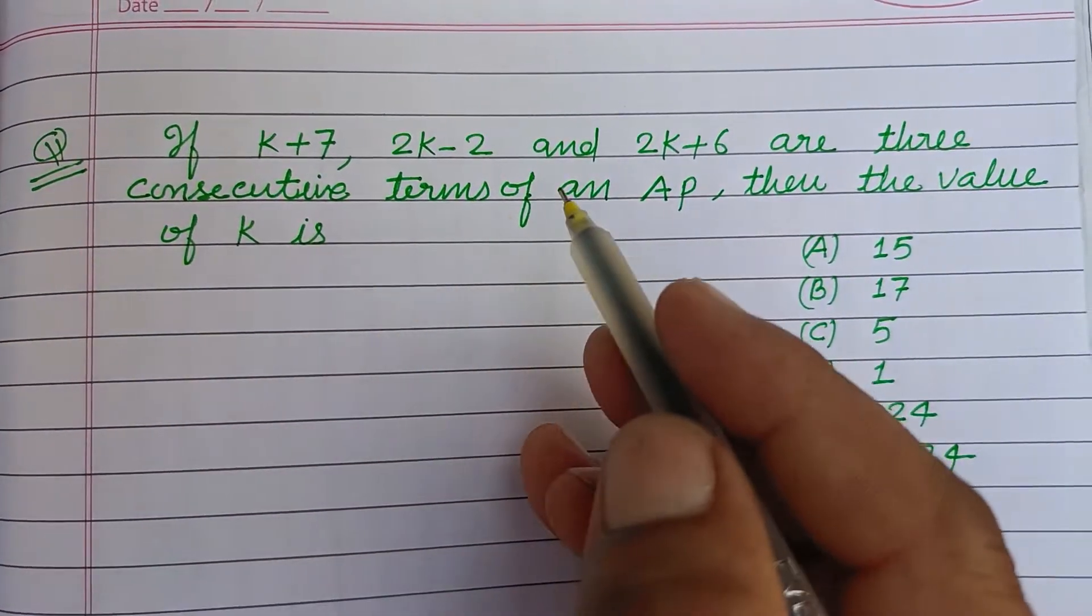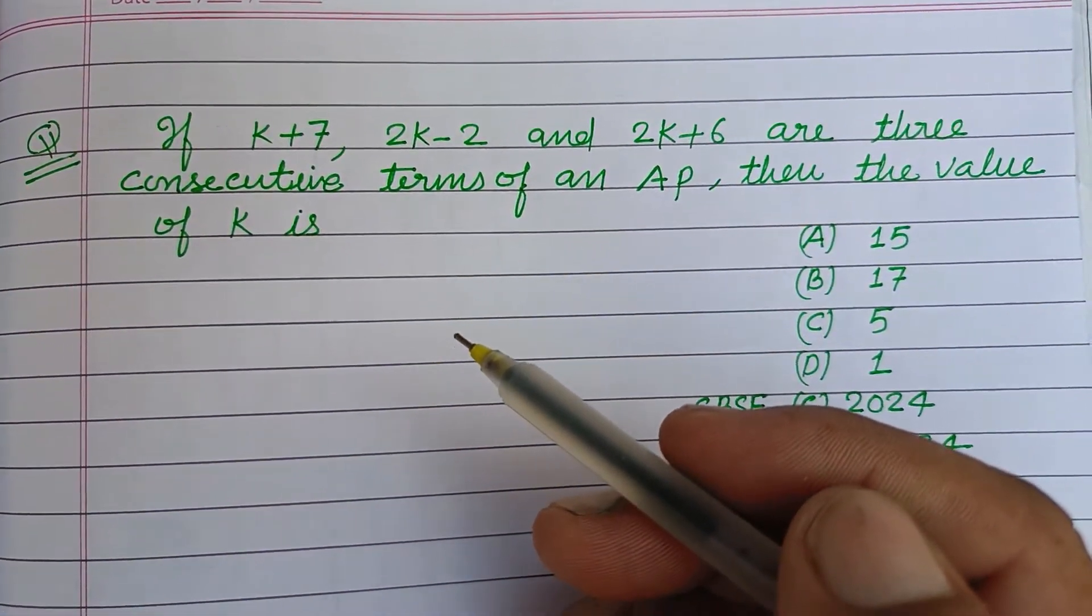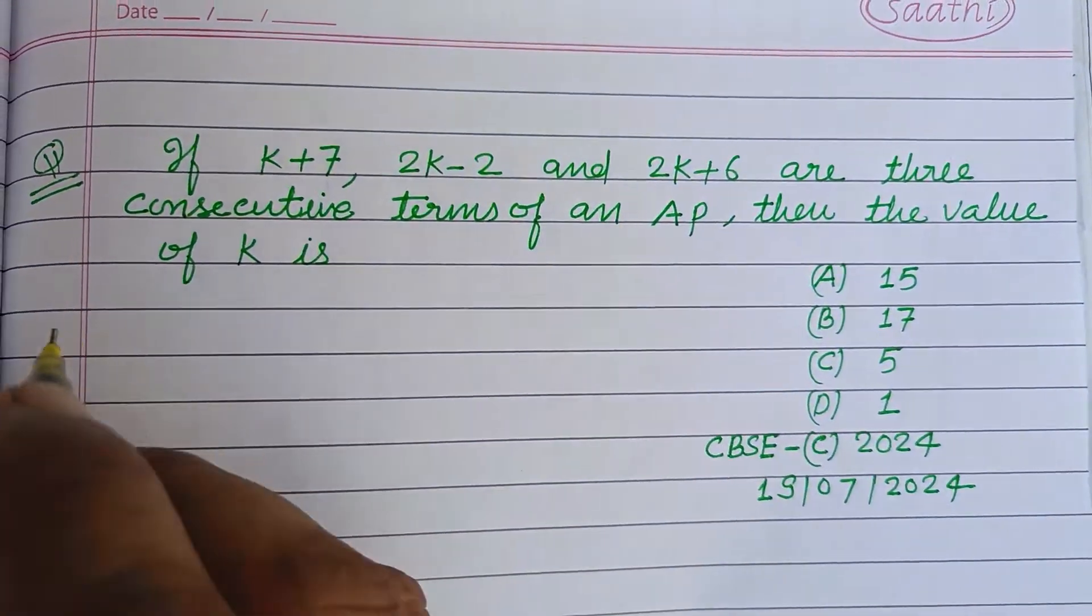If k+7, 2k-2, and 2k+6 are three consecutive terms of an AP, then the value of k is.